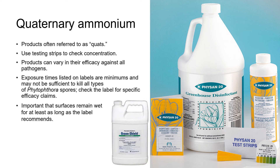An alternative to sodium hypochlorite is quaternary ammonium — products with this as their active ingredient are often generically referred to as quats. These products can vary in their efficacy against all pathogens and the exposure times listed on the labels are minimums; they may not always be sufficient to kill all types of Phytophthora spores. So always check the label carefully for specific efficacy claims. It's also important that surfaces remain wet for at least as long as the label recommends. Like sodium hypochlorite, quats lose their concentration when exposed to organic matter, so always mix fresh batches regularly and use the appropriate testing strips to check concentration.